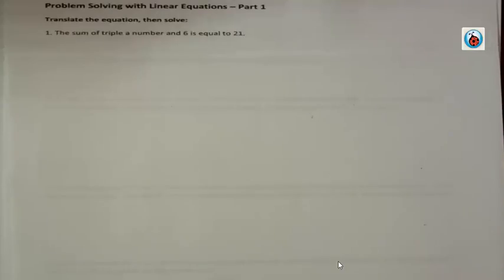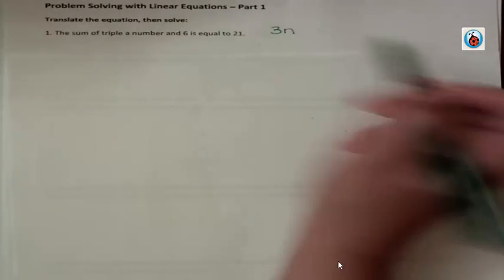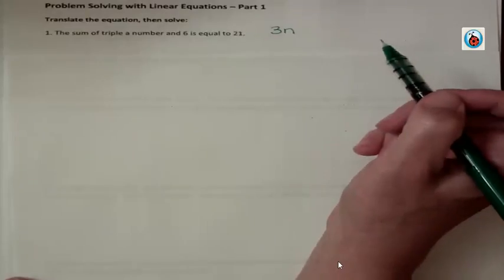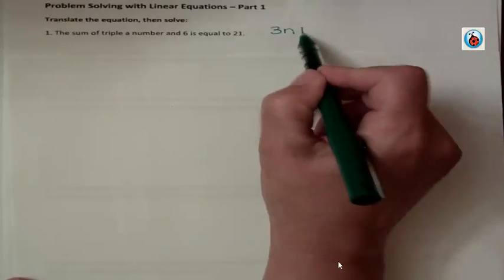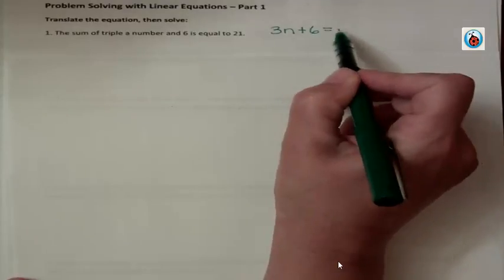This says the sum of triple a number and 6 is equal to 21. Well, what does triple a number look like? Triple a number looks like 3n or 3x or something like that, and 6, that's just addition. Is equal to, there's our equal sign, 21.